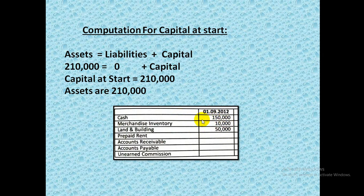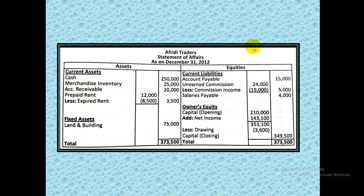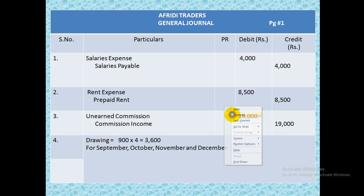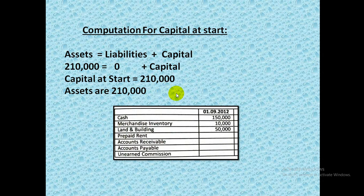Let's start. First of all, see how we will calculate capital at start. This information was given to us in the question — on September 1, his assets are given; there are no liabilities at the beginning of the business. We know the accounting equation: assets minus liabilities equals capital. When no liabilities are given, they are zero, so assets minus liabilities gives the capital amount, which is 2,10,000. We need to calculate capital at start because in the balance sheet we will write capital at start in the owners equity section.